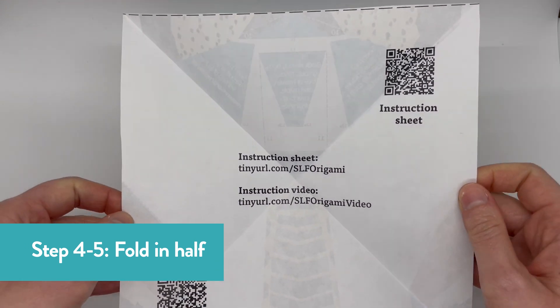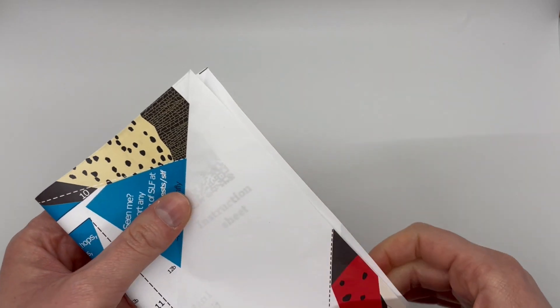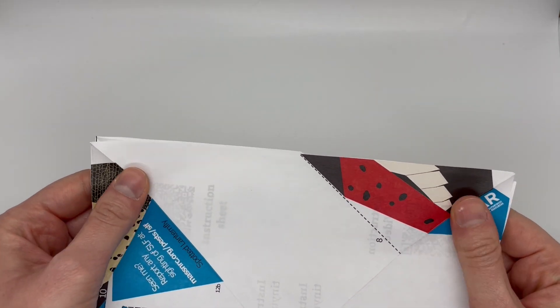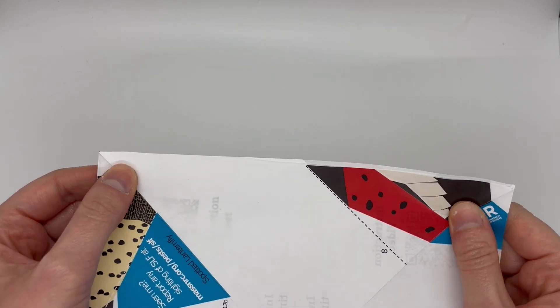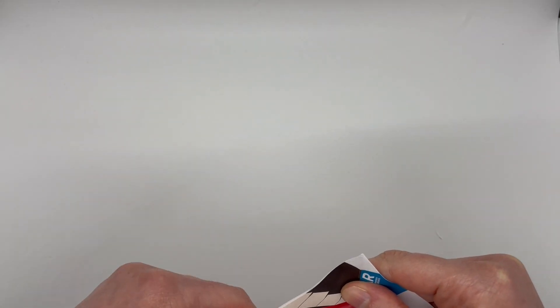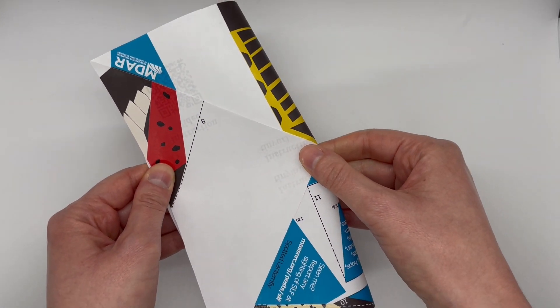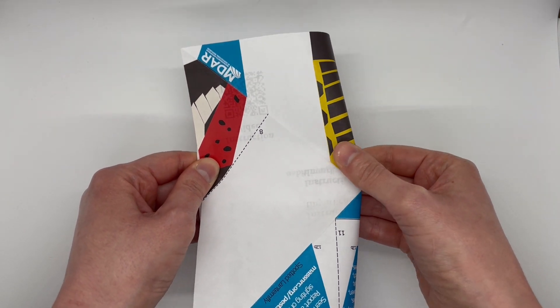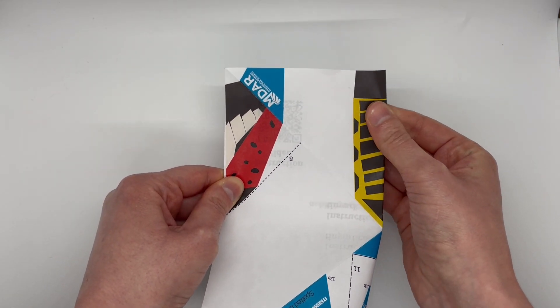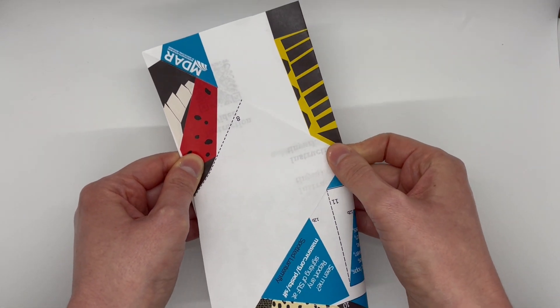Step 4. Fold the paper in half along the vertical line. Did you know, spotted lanternflies produce a sticky liquid called honeydew that gets all over everything underneath them and even grows mold.